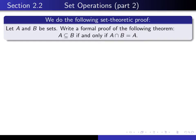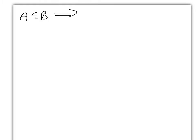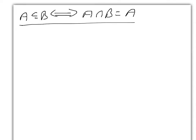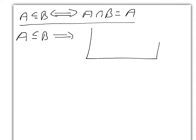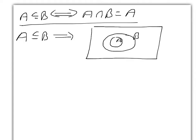But probably before we begin to write the proof, maybe we should draw some pictures to convince ourselves that it should be true. So we're trying to convince ourselves that A is a subset of B if and only if A intersected with B is equal to A. If A is a subset of B, the picture shows A lying inside B, and when you take the intersection of A with B, you just get back A — so that certainly seems to imply that A intersect B is equal to A.